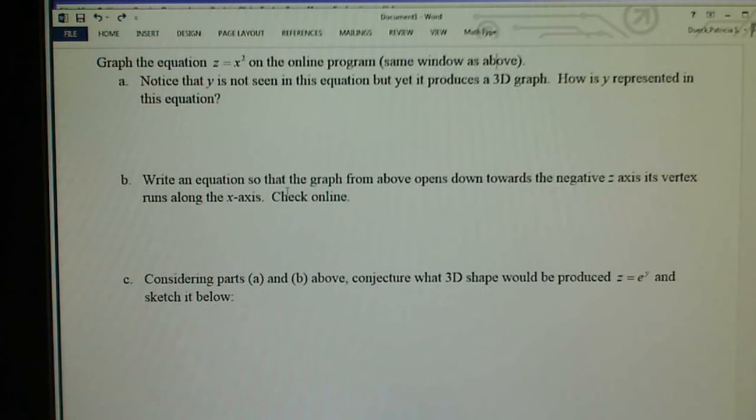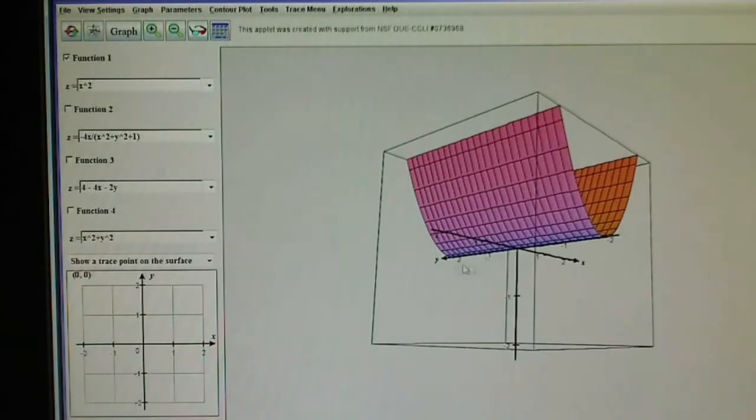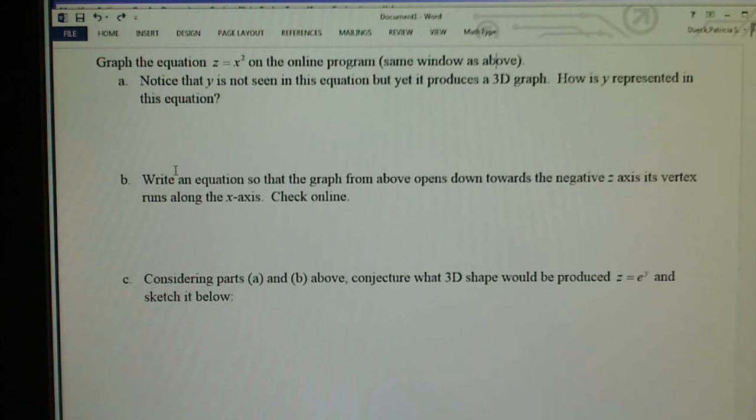Now it says write an equation so that the graph from above opens downward towards the negative z axis. Its vertex runs along the x axis. Here the vertex is running along the y axis. I wanted to turn it over and run it along the x axis. Opens downward towards the negative z axis and runs along the x axis.